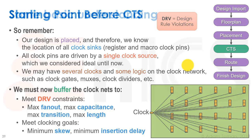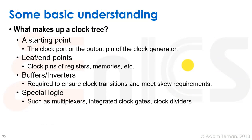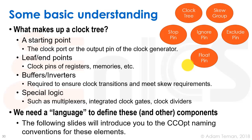Some basic understanding: what makes up a clock tree? We have a starting point — the port or output pin of the clock generator where the clock is sourced from. We have leaf or endpoints — those are clock pins of registers, memories, etc. We have buffers and inverters required to ensure clock transitions and meet skew requirements. We may also have some special logic on the clock such as multiplexers, integrated clock gates, and clock dividers.